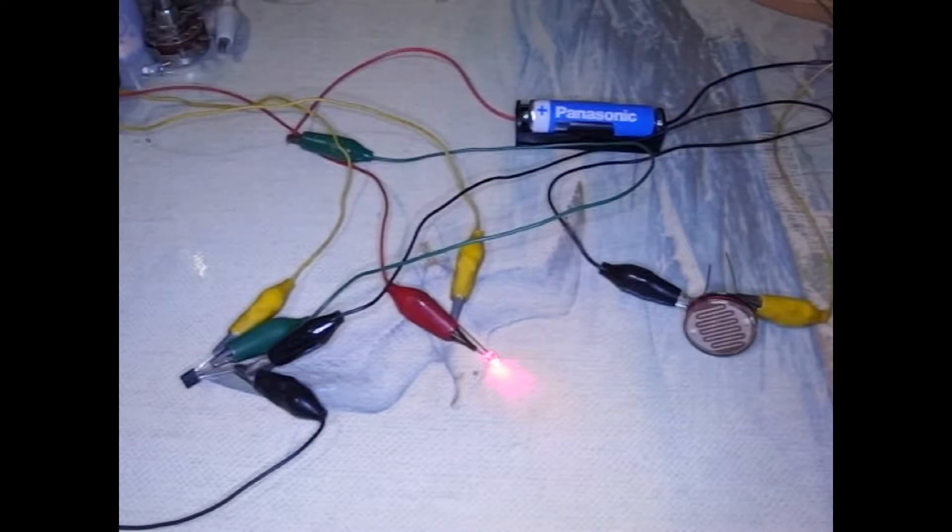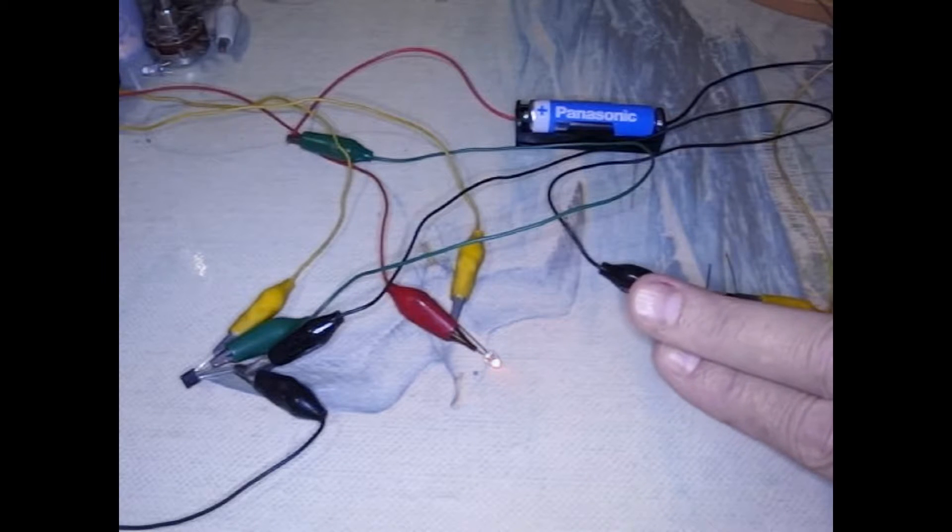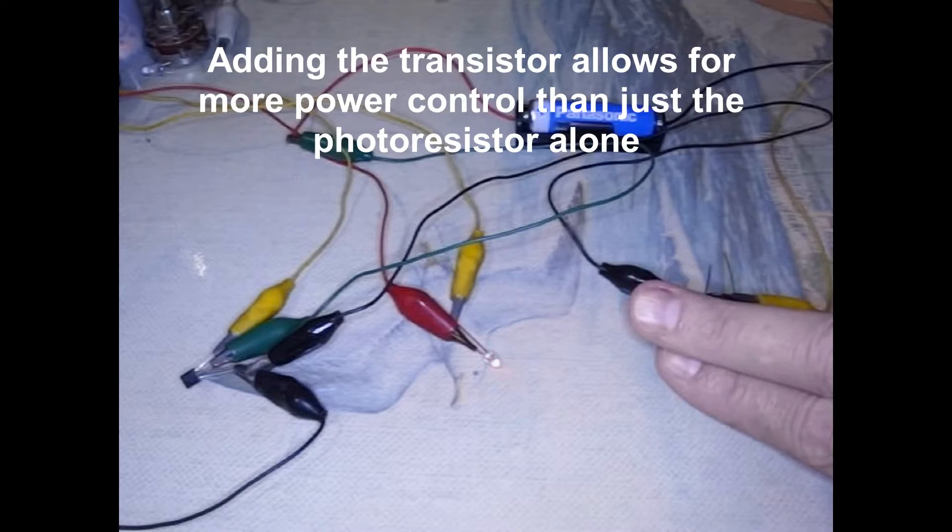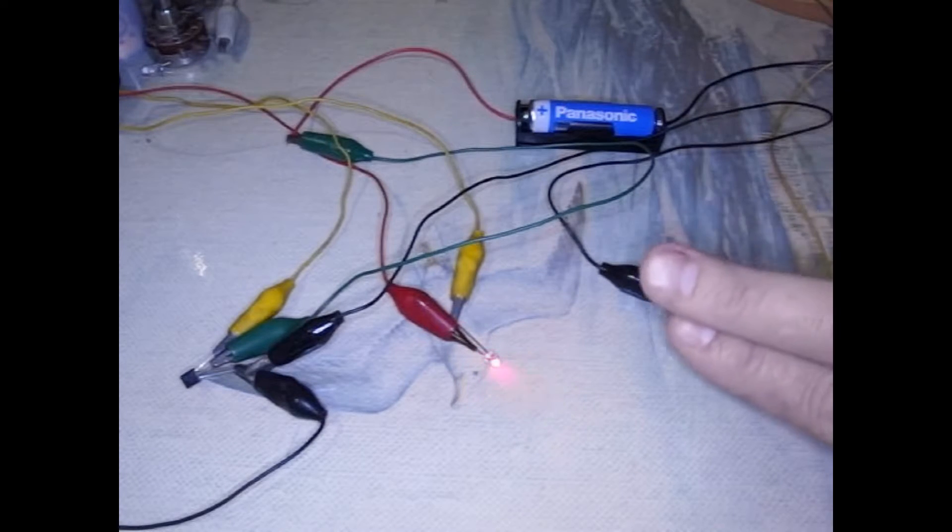Another use for the signal amplifier is light detection. In this case, we have a photo cell and when I block the light of the photo cell, you can see the LED changes. It goes on and off.